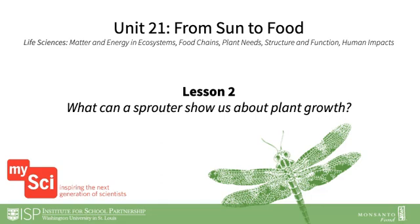In this lesson, students will begin to investigate how plants obtain matter, also known as mass, through a sprouter demonstration. Students will predict the source of new mass in plants and then perform an experiment to answer this question. A seed sprouter with four kinds of seeds will be observed for five days, then the data will be analyzed. Students figure out that plants gain mass in the form of matter without soil. This lesson will take about two days while monitoring continues throughout the week.